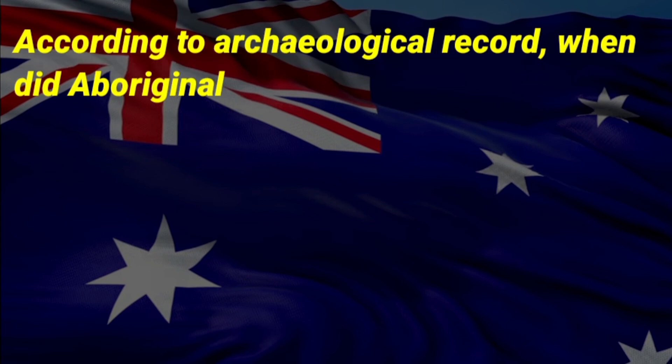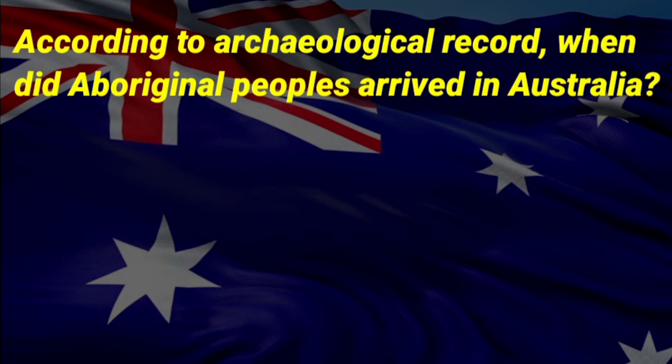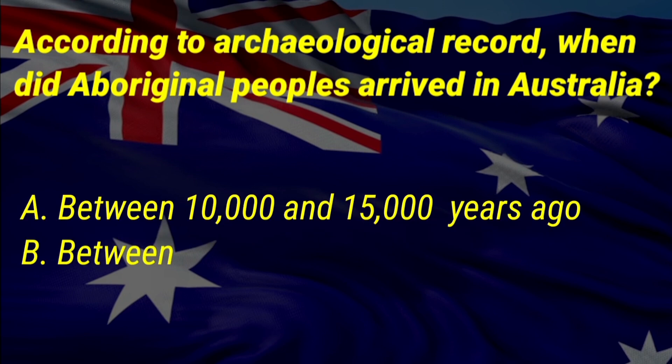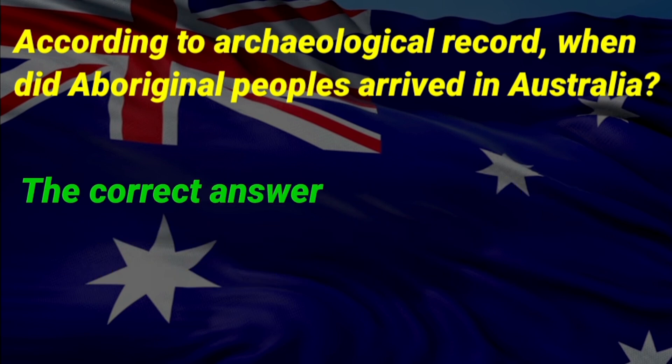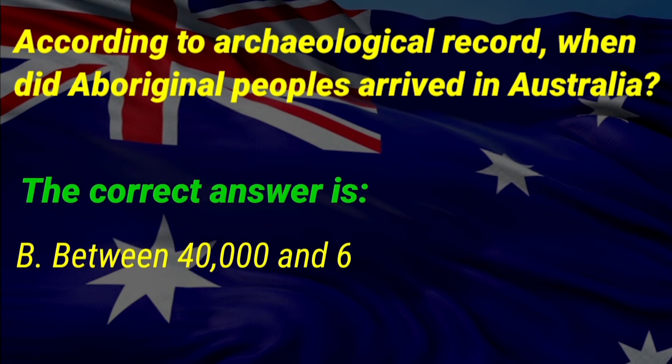According to the archaeological record, when did Aboriginal peoples arrive in Australia? A: between 10,000 and 15,000 years ago, B: between 40,000 and 65,000 years ago, C: between 20,000 and 30,000 years ago. The correct answer is B, between 40,000 and 65,000 years ago.